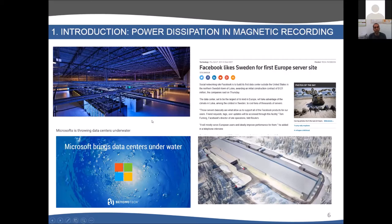This is a problem of economic impact. For example, Google has to build cooling refrigerating systems to avoid this heating problem. Microsoft brought data centers underwater, under the ocean, and Facebook has servers in cold countries like Sweden to take advantage of the cold weather.